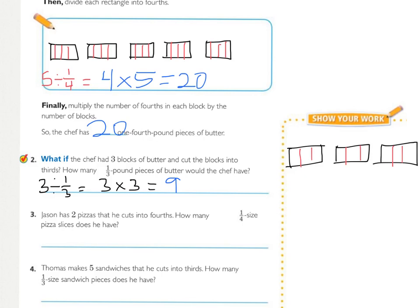Number three. Jason had two pizzas that he cut into fourths. Two pizzas, and he cut into fourths. So I have two circles divided into fourths. How many does he have? There's four times two equals eight. So your total would be eight for that one.